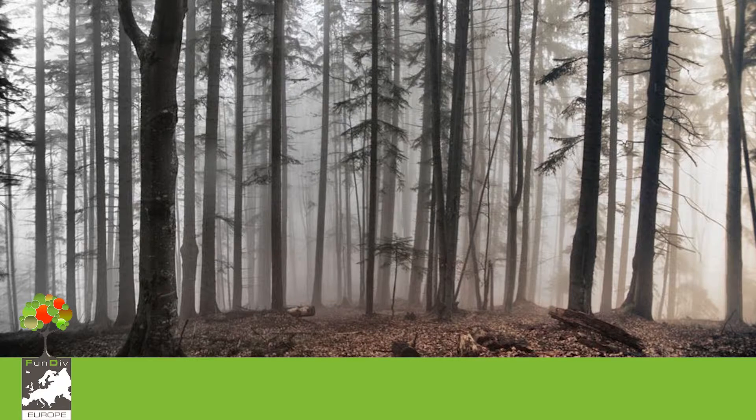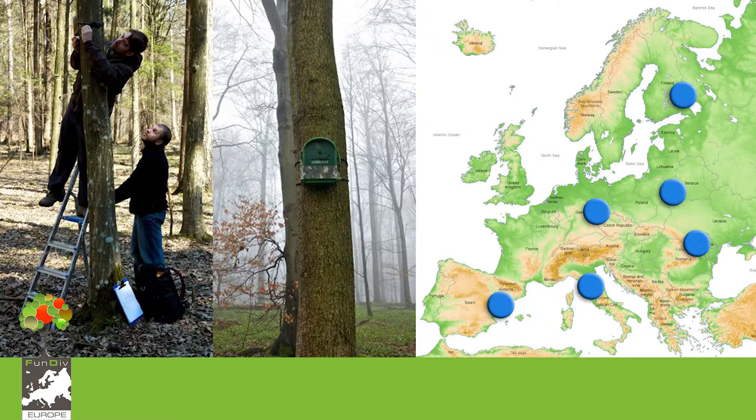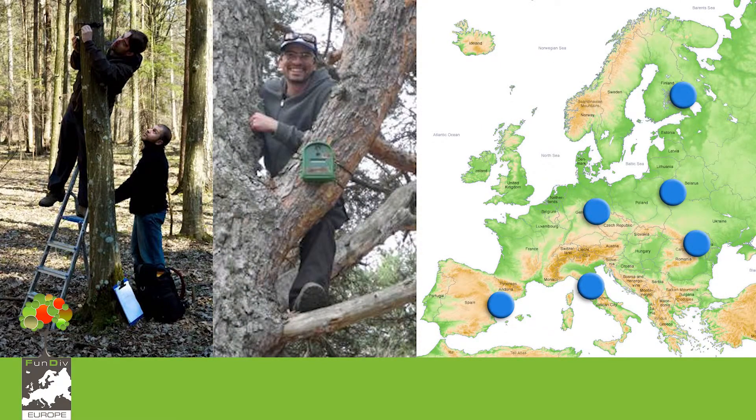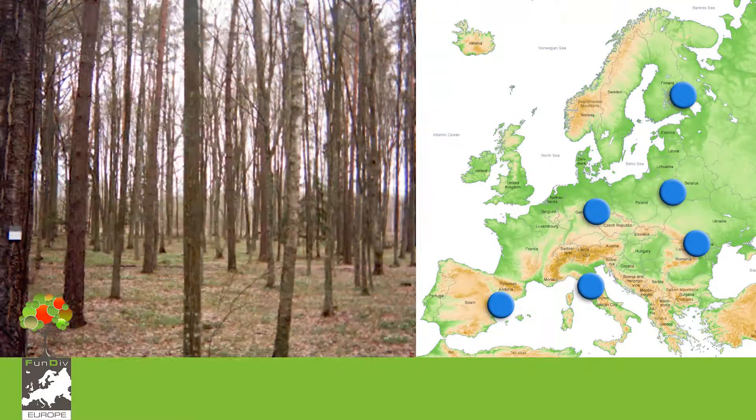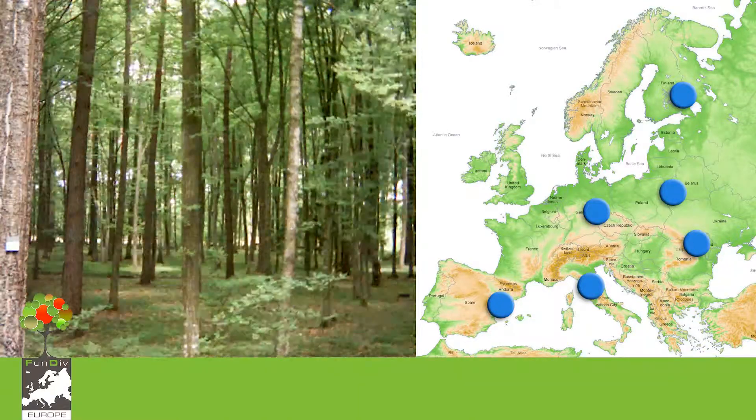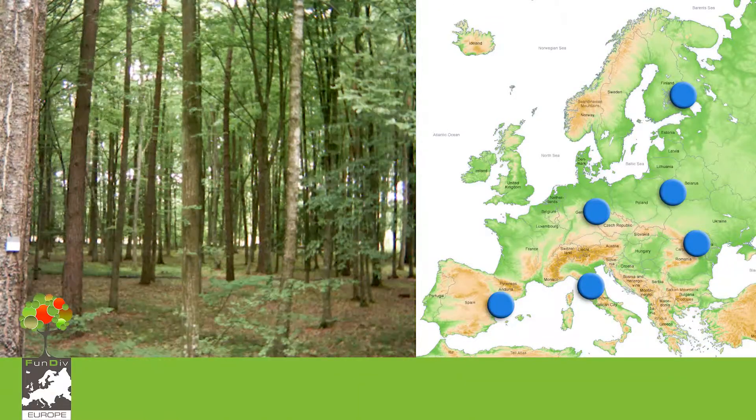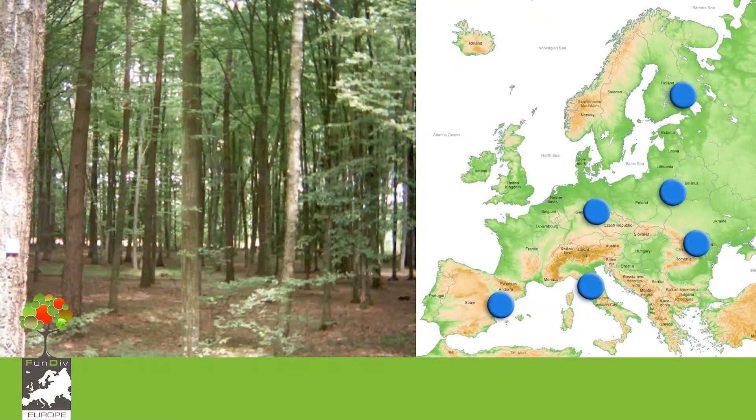We do this by using digital photography, taking repeat pictures of the forest stands. We install time-lapse cameras in all the plots in every region of the FunDiv network that are taking a view of the plot and capturing an image every three hours for every day of the growing season. This results in about 600 to 700 images per year for each plot.